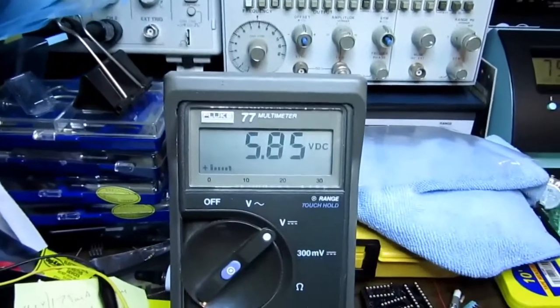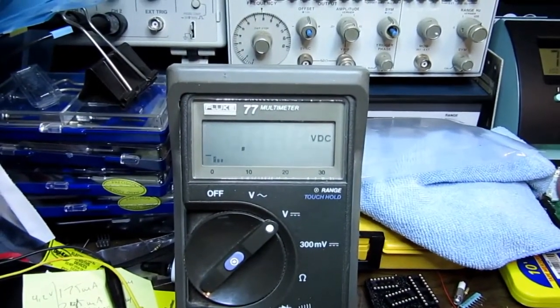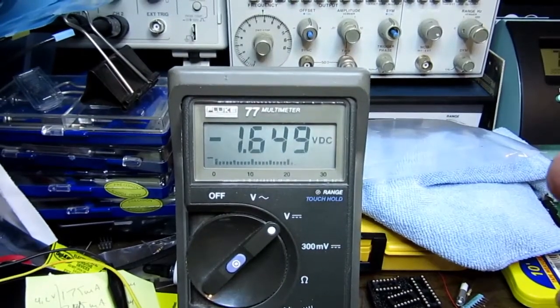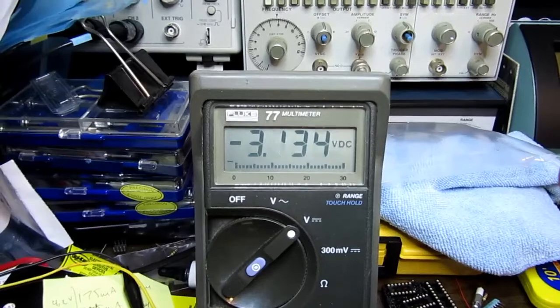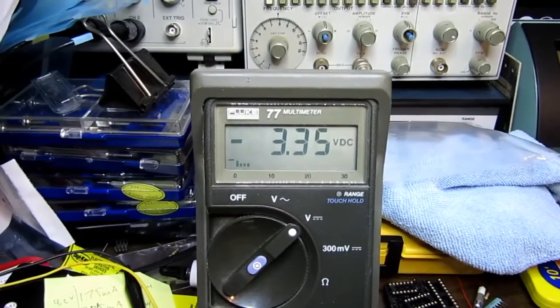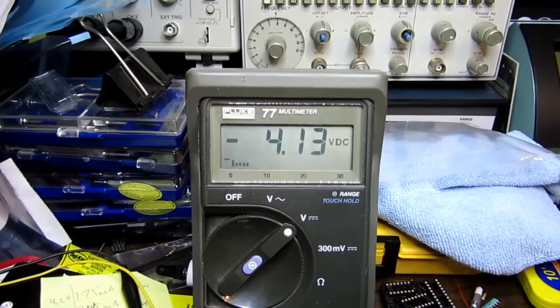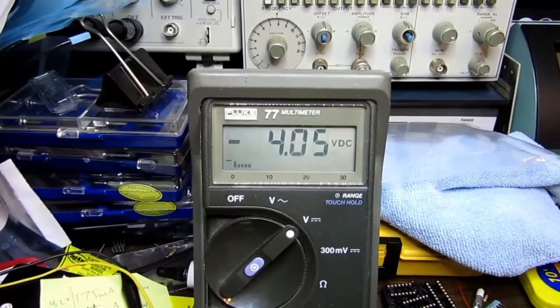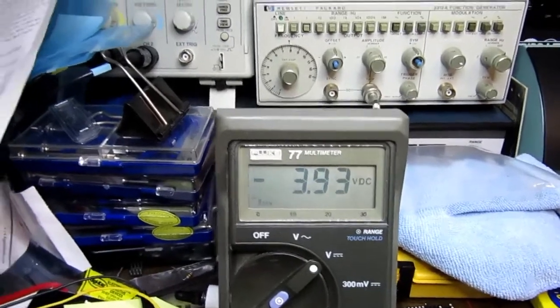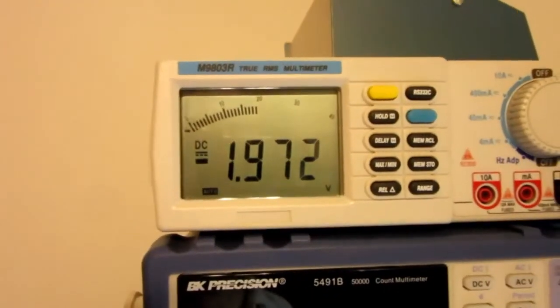What if I crank the pot until I get an output of... Well, let's say I'll shoot for minus 4 volts. Bring it back a little bit the other way. Pretty darn close to minus 4 volts. And the input is pretty close to minus 2 volts.